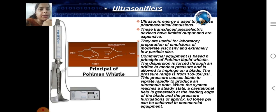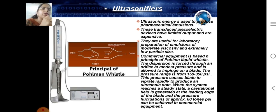Commercial equipment is based on the principle of the flowing liquid vessel. The dispersion is caused through the orifice at modest pressure and is allowed to impinge on a blade. The pressure ranges from 150 to 350 psi.